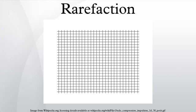Rarefaction can be easily observed by compressing a spring and releasing it. Instead of seeing compressed loops seeming to move through the spring, spaced-out loops move through it.